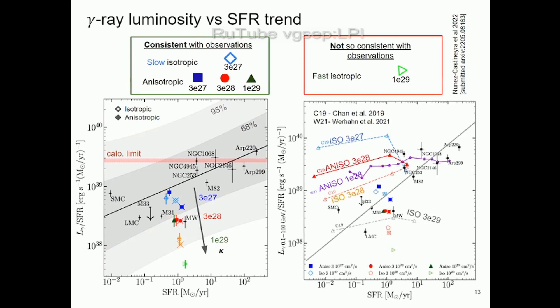There is a problem: other simulations — such as Chan et al. 2019 and similar works — tend to say the opposite. They find that slowly diffusing cosmic rays in simulations yield gamma-ray luminosity well above observations, while fast diffusion brings galaxies into agreement. This is not what we find — in our simulations we recover agreement with observations across both slow and fast diffusion ranges using parameters consistent with Milky Way predictions.